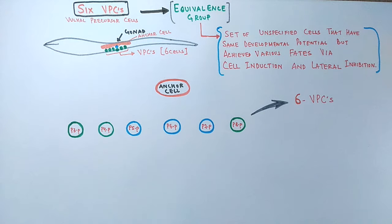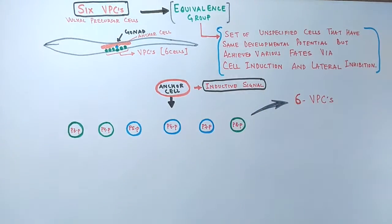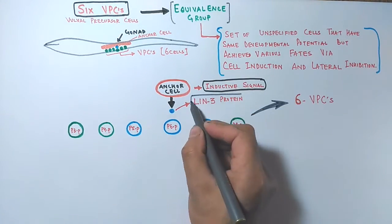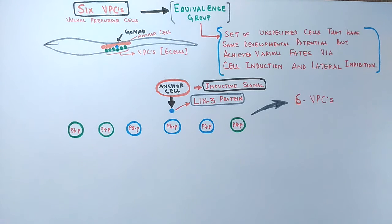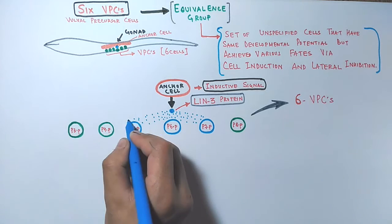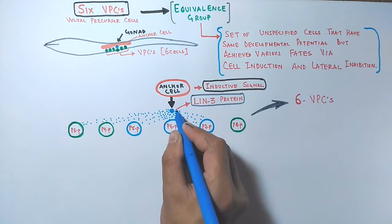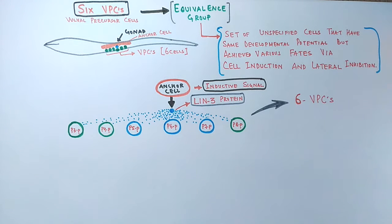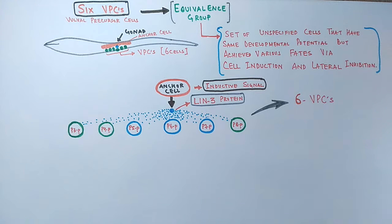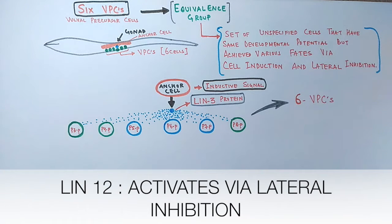We need to determine which cells become vulva cells and which become hypodermis — this depends on inductive signals from the anchor cell. The anchor cell signals the VPCs through a molecule called LIN-3 protein, which is similar to EGF. However, LIN-3 is not received equally by all VPCs. As shown in the diagram, the small dots denote LIN-3 concentration. The P6.p cell receives the most LIN-3, nearby cells receive less, and outer cells receive negligible concentration.